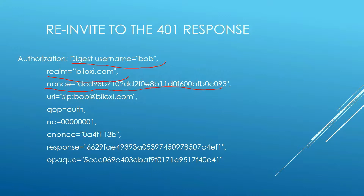An important point is that the re-INVITE should have the same Request-URI as the original INVITE, and the Request-URI in the SIP must match the URI specified inside the Authorization header. The qop mechanism being used is auth. There is also a password — the response field is an MD5 hash value. Using the username and this MD5 response, the server can check its database to determine whether it can authenticate this user.